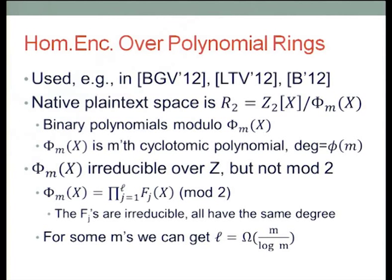Homomorphic encryption over polynomial rings: we start from the currently most efficient family of homomorphic encryption schemes — the paper by Bukarski et al. from earlier this year, the Lopez-Alt paper in STOC, and another Bukarski paper on ePrint. All of them belong to slightly different variants of a family of functions such that the native plaintext space in all of these schemes are polynomials. The thing that's encrypted is actually a polynomial in some polynomial ring. When you do multiplication you get multiplication of polynomials in that ring, and when you do addition you get addition of polynomials. You can use those polynomials to encode single bits, but as I will show in a minute, you can use them to encode things other than bits.